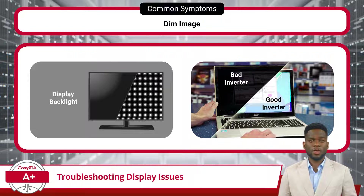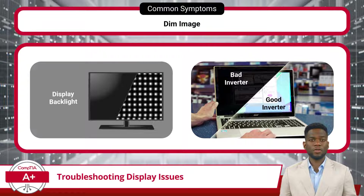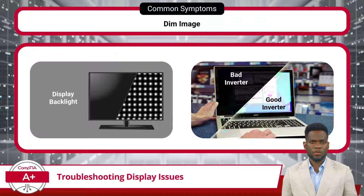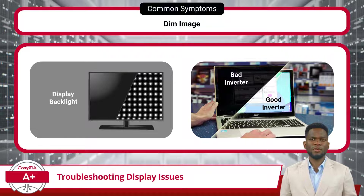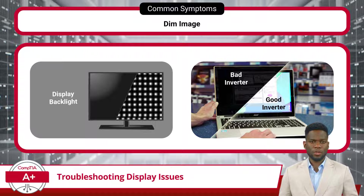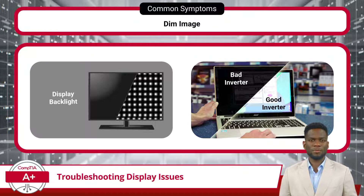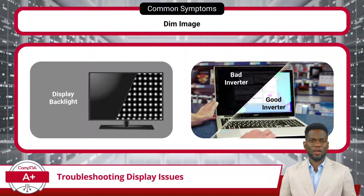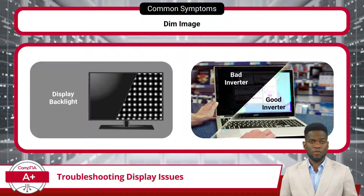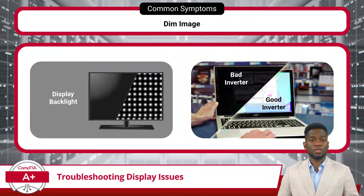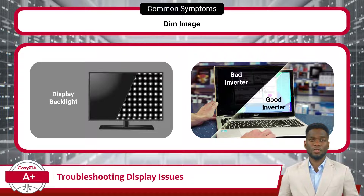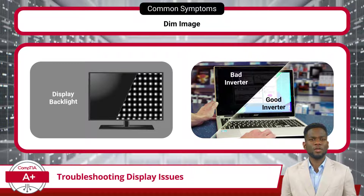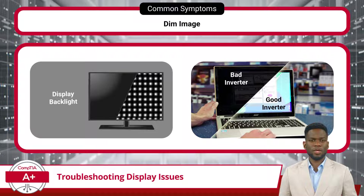A dim image is another display issue where the display appears significantly darker than desired. This can arise from various causes. First, an incorrect brightness setting on the source or display device may be at fault, leading to decreased illumination levels. Additionally, in the case of a monitor, a failed backlight may be responsible. With many modern monitors, a backlight is used to illuminate the display panel, allowing images to be visible. If the backlight fails or malfunctions, it can result in a dim or completely dark display.